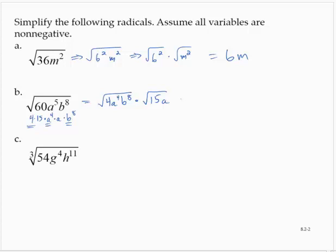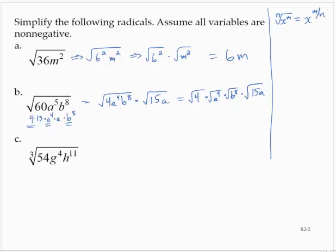Now, the square root of 4, a to the fourth, b to the eighth — remember from previous — we have the square root of 4 times the square root of a to the fourth times the square root of b to the eighth, and then times the square root of 15a. Recall from a previous chapter that the nth root of x to the m is x to the m over n. So the square root of 4 is 2. The square root of a to the fourth is a to the 4 over 2, recalling that there's an understood index of 2 on those radicals. The square root of b to the eighth is b to the 8 over 2. And then we'll leave that square root of 15a alone.